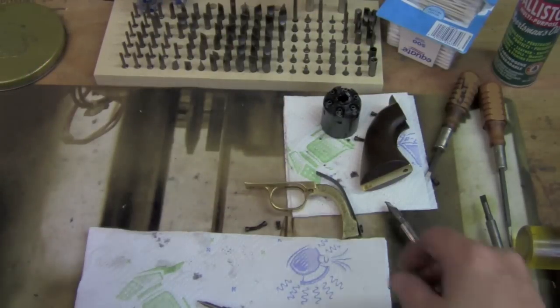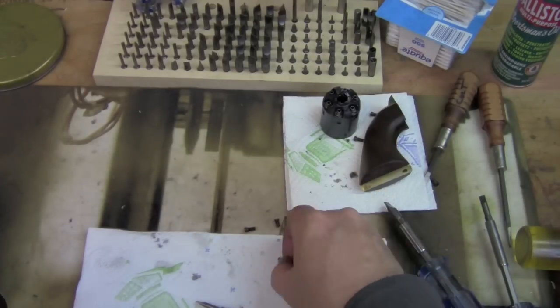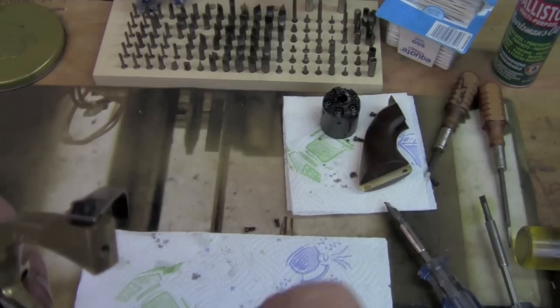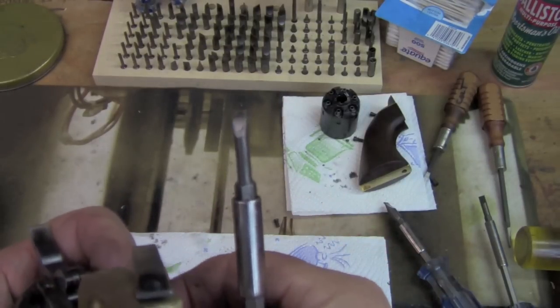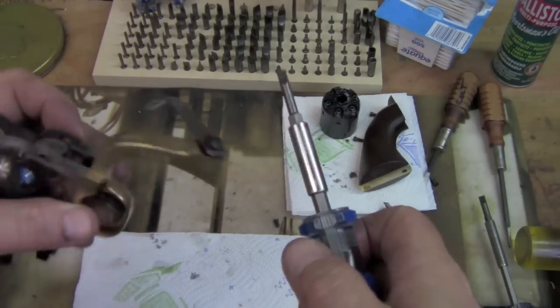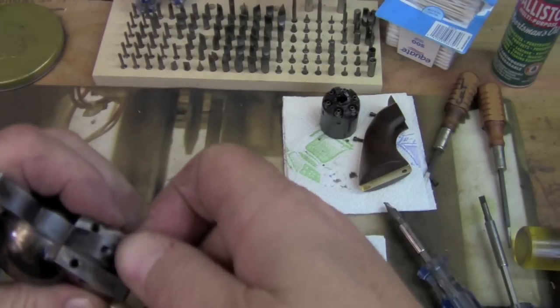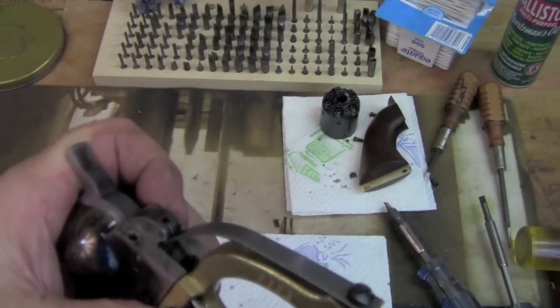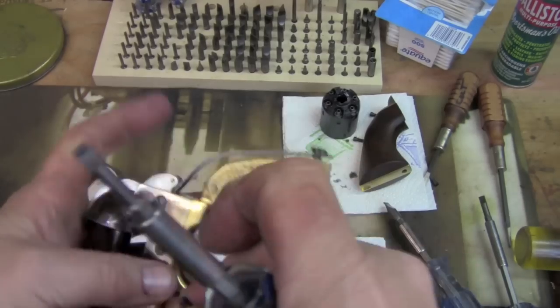So the first thing we're going to put on is the trigger guard. And I'm going to partially put the screws in. So I just want to kind of catch them. Okay, so when I feel the screws catch, I know we're going to be good. But I don't want it tight. Okay. Because I want the room to get the hammer spring in place. Which now I've got. So you can see I can swing that in. And now I can torque these down. And I can put in the front screw.